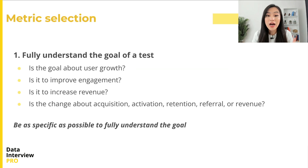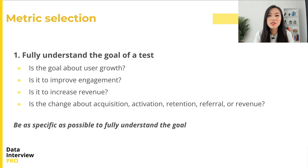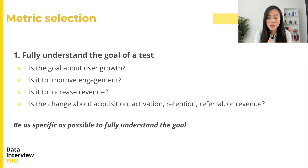One way I've found particularly helpful to come up with metrics is to fully understand the goal of a test. Is the goal about user growth? Is it to improve engagement, or to increase revenue? Is the change about acquisition, activation, retention, referral, or revenue? We want to be as specific as possible to fully understand the goal — doing this will help you come up with a metric or two.